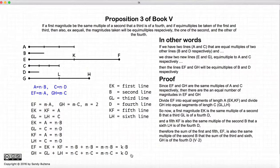To show this algebraically, EF is equal to EK plus KF, which is equal to N times B plus N times B, which is equal to the multiple M times N, or in other words, a new constant K. We can do the same for GH, and we end up that EF and GH are going to be equal multiples of B and D. And that's how you would show it algebraically as opposed to geometrically.